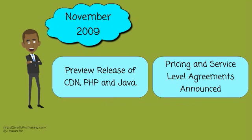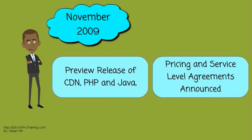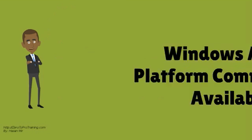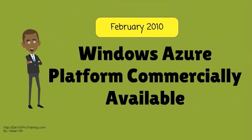In November 2009, a preview release was made available for Content Delivery Network, PHP and Java. VM role instance type service level agreements and pricing were announced.